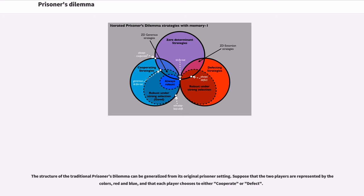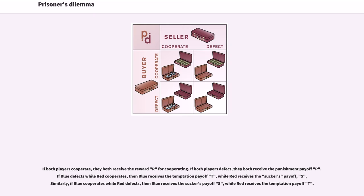The structure of the traditional prisoner's dilemma can be generalized from its original prisoner setting. Suppose that the two players are represented by two colors, red and blue, and that each player chooses to either cooperate or defect. If both players cooperate, they both receive the reward R for cooperating. If both players defect, they both receive the punishment payoff P. If blue defects while red cooperates, then blue receives the temptation payoff T, while red receives the sucker's payoff S.